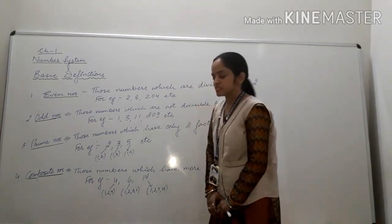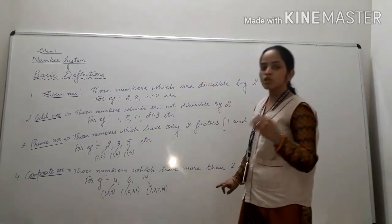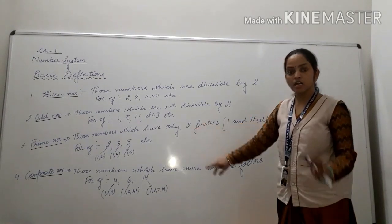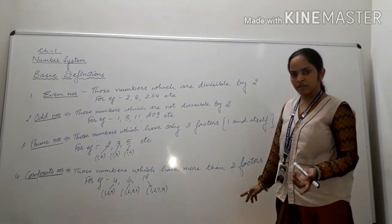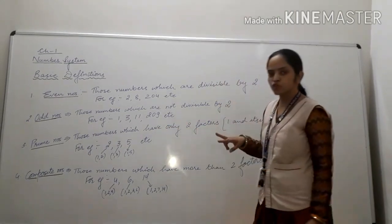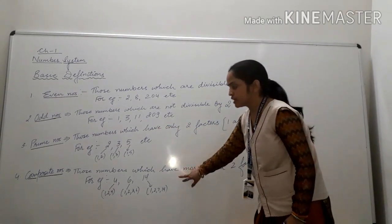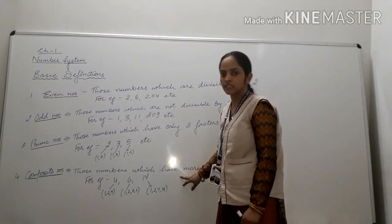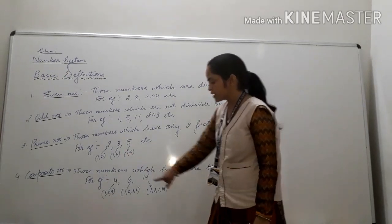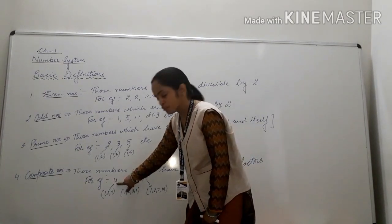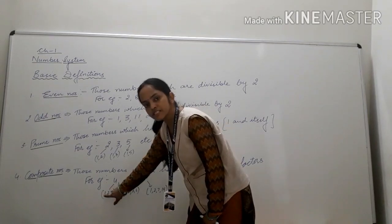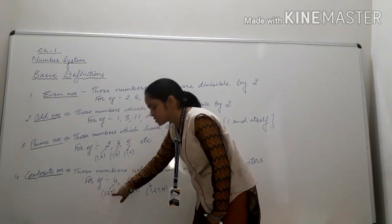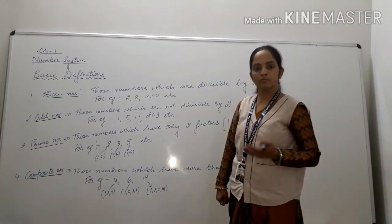Moving ahead to composite numbers: composite numbers are those numbers which have more than 2 factors. We can also say that composite numbers and prime numbers are opposite of each other, because in prime numbers we have only 2 factors, while in composite numbers we have more than 2 factors. For example, 4 is divisible by 1, 2, and 4 — it has 3 factors, more than 2, so 4 is in the category of composite numbers.